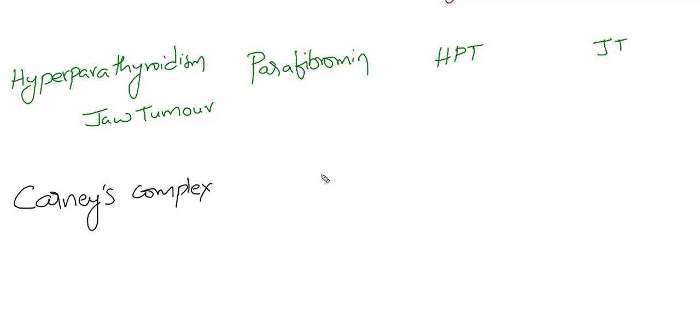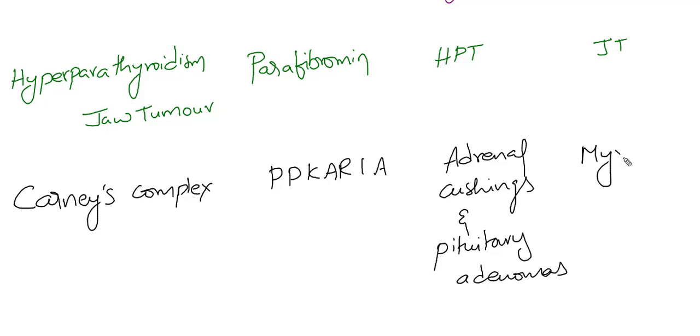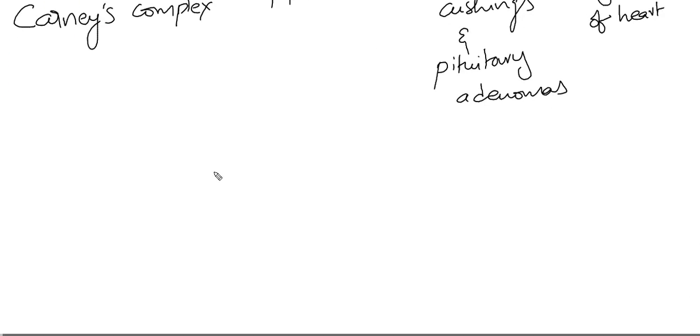The last one is Carney's complex. The gene associated is PPKAR1A. Adrenal Cushing and pituitary adenomas are the endocrine abnormalities, and the malignancy is myxoma of heart. This is about MEON - Multiple Endocrine and Other Organ Neoplasia syndrome.